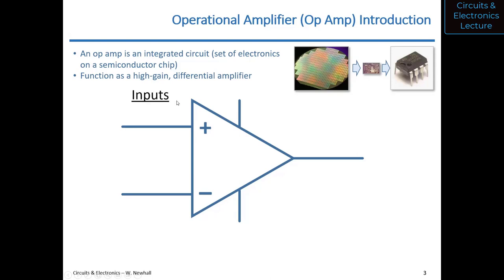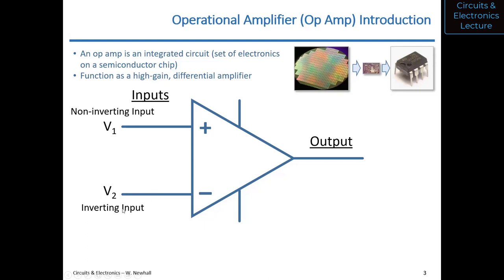Op amps function as a high-gain differential amplifier. High gain means you take a voltage and multiply it by a big number — a gain is a multiplication of a voltage or current. It's differential because the op amp looks at the difference between two voltages and multiplies that value. On the left are the inputs — V1 and V2. The terminal associated with V1 is called the non-inverting input (with a plus sign). The other is the inverting input (with a minus sign). Those plus and minus signs are not power supplies — they just indicate which input is which.